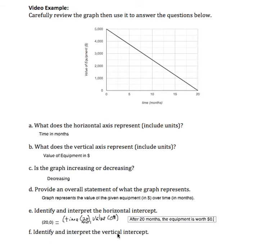Identify and interpret the vertical intercept. The vertical intercept is the point at which the graph crosses the vertical axis, which is here.